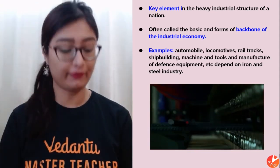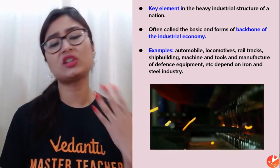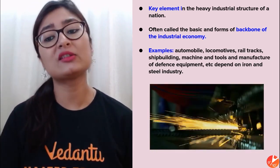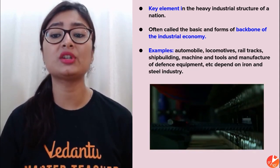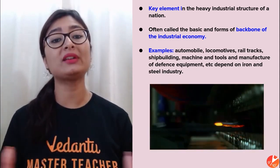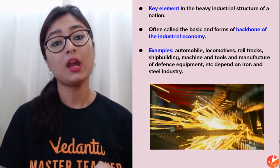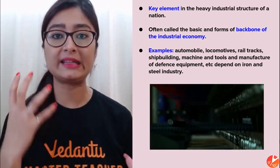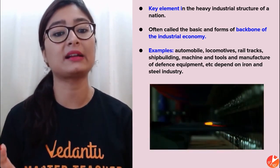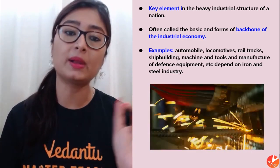The key elements that form iron and steel industry include automobiles, locomotives, rail tracks, shipbuilding machines, tools, and defense equipment — all of these industries depend on steel. The amount of steel consumption in any country tells you whether that country is economically developed or not, whether there is industrial development or not. More iron and steel consumption means more machines are being used and more industries are being established.